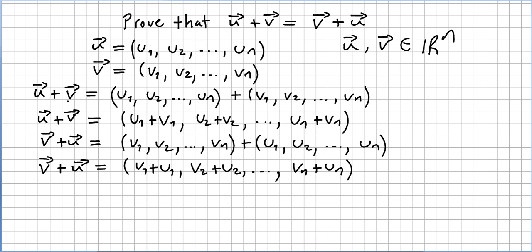So u plus v will be, by definition, the vector (u1, u2, ..., un) plus the vector (v1, v2, ..., vn). By definition of component addition, u plus v will be (u1+v1, u2+v2, ..., un+vn).